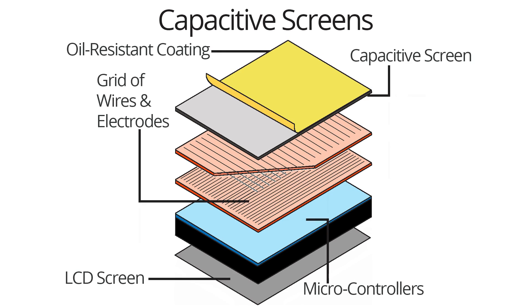A layer of the screen is coated with a conductive material and a small amount of voltage is applied to the conductive layer to create an electrostatic field.